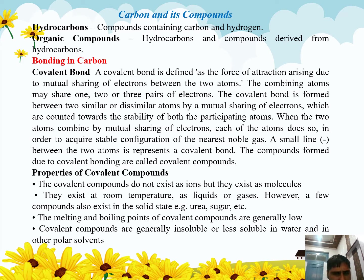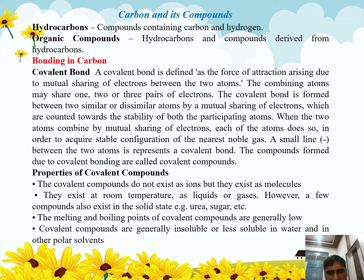When two atoms combine through mutual sharing, each atom does so in order to acquire the stable configuration of the nearest noble gas. When we talk about the covalent bond, it gives neon's noble gas configuration. Similarly, for atoms after neon — sodium, magnesium, aluminium — they form argon noble gas configuration.